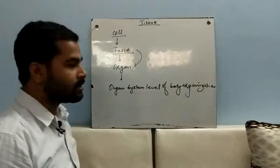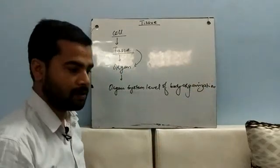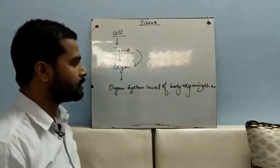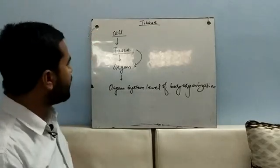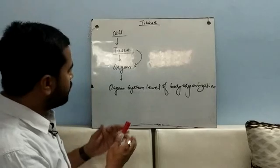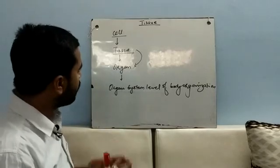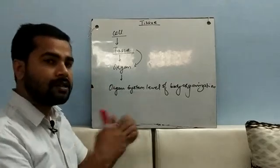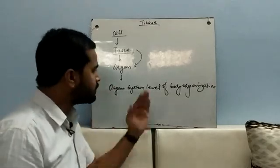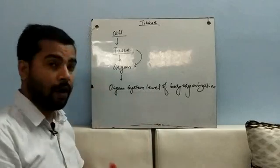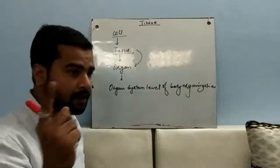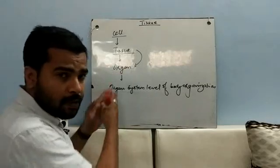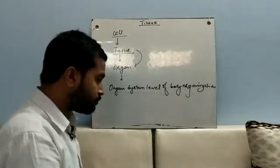So we started from cell to tissues to organ and then organ system level of body organization. Now think about this: which is stronger — the organism that has only tissues, or the one with organs, or the one with organ system level of body organization? Try to answer that question. Now I'm sticking with our topic, which is tissue.